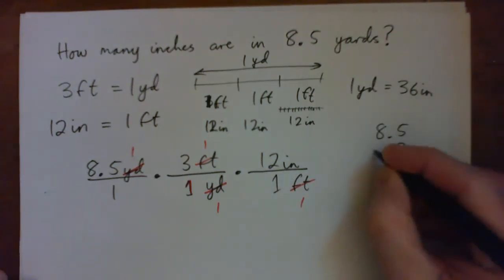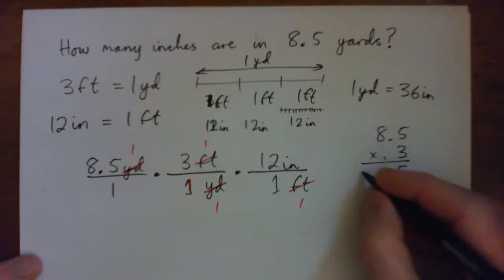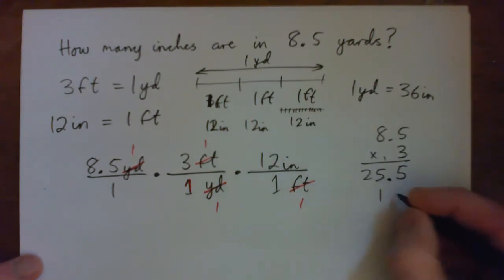I better do the multiplication properly. Actually, 8.5 times three: three fives is 15, carry one, three eights is 24 and one is 25. So 25.5.